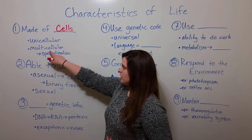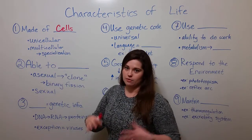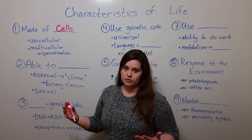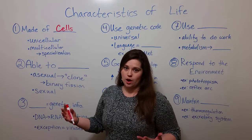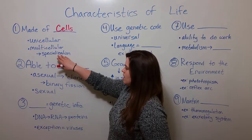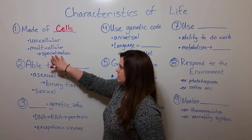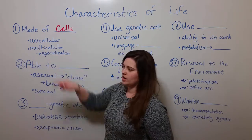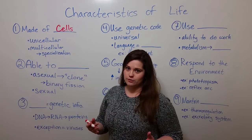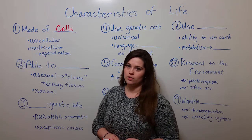There are also many forms of life that are multicellular, meaning made of multiple cells. Animals, for example, are multicellular. And in multicellular organisms, we have something known as specialization — cells that are specialized for different functions within the multicellular organism.